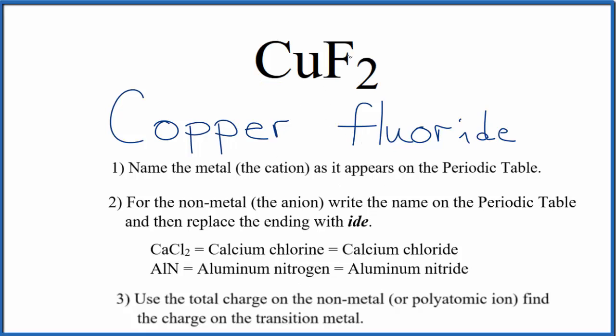So we're going to use the total charge of the non-metal, the fluorine here, to figure out the copper. We know that fluorine forms the fluoride ion, which is one minus, and we have two of them. Two times one minus, that's two minus, so copper has to be two plus.